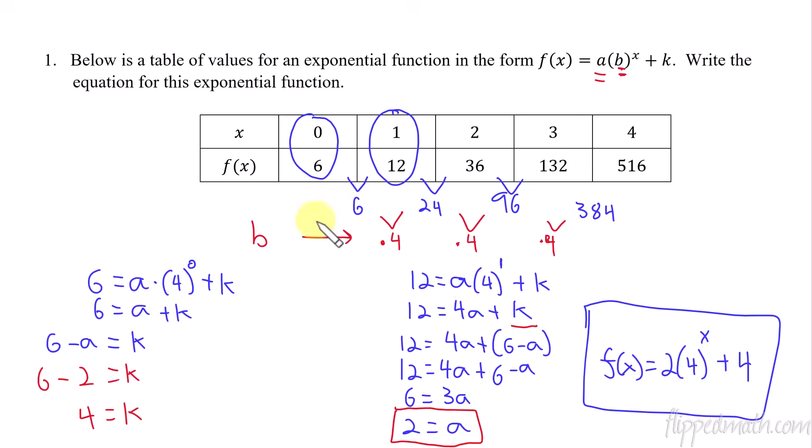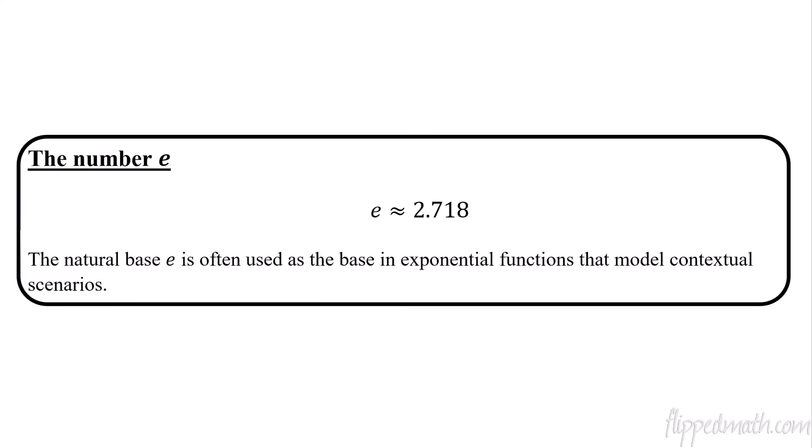All right, now our final equation. We get f(x) equals, I know that a is a 2. My proportional value that I'm multiplying by is a 4. Raise it to the x, and I'm shifting it up 4. That is the equation for this table of values. It's because we couldn't see it at the beginning. We couldn't see what the proportion was. But we could still work it out by using some algebra skills to figure out the equation there.